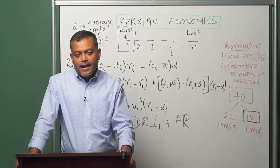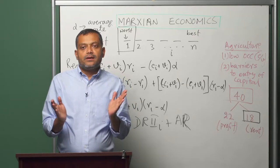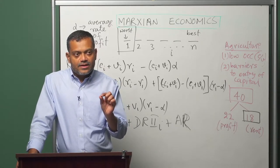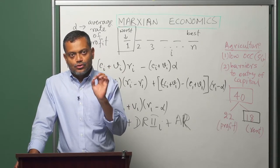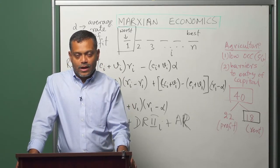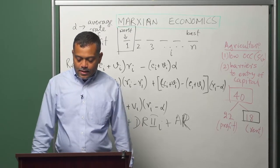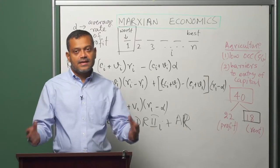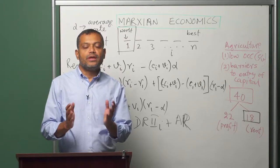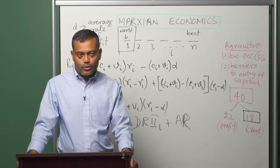Marx's analysis focused mostly on agriculture, but it can be applied to other sectors as well. What is essential is that the sector uses some resource for producing commodities through which surplus value can be realized. Oil and natural gas, real estate, and other sectors relying on natural resources can be equally well analyzed using the framework developed by Marx in volume 3 of Capital.